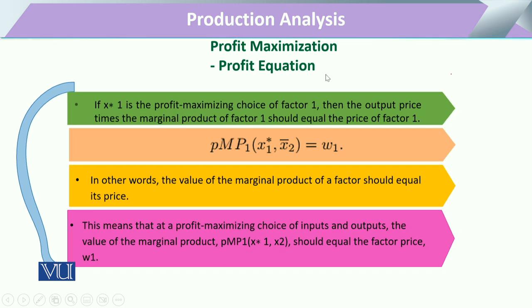When we explain this optimization — the profit-maximizing choice for factor one — we have to check factors of production such as capital, labor, or x1 and x2. We check how profit is going to be maximized with respect to only one input, x1. While dealing with this, we keep the other input constant, and then the output price multiplied by its marginal value product gives us the wage.